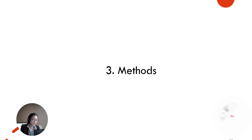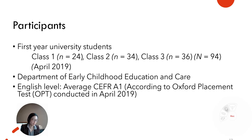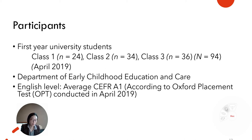Now that I have gone over important terminology, next let me explain the methods for my study. Participants were first-year university students in the Department of Early Childhood Education and Care. Three classes were involved. In April 2019, class 1 had 24 students, class 2 had 34, and class 3 had 36, totaling 94 students. Their average English level was A1 according to the Common European Framework of Reference, based on an Oxford placement test conducted in April 2019.